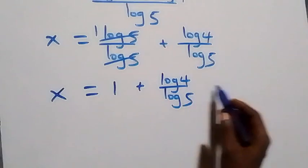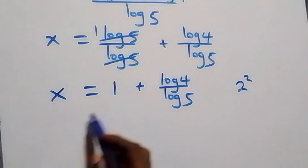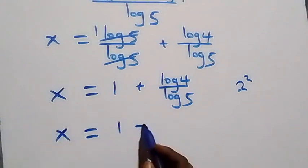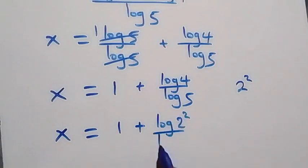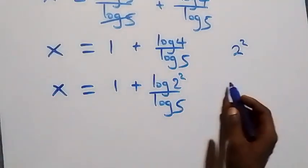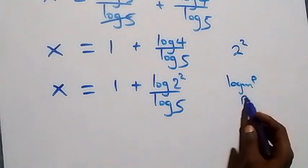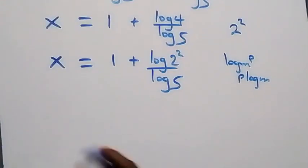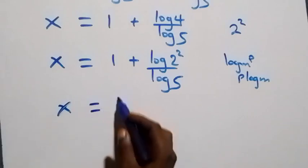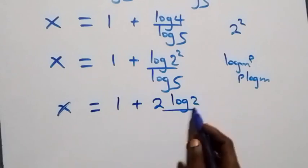From here, we express 4 as 2 squared. So x equals 1 plus log(2²) over log 5. Applying the power rule of logarithms — log of m raised to power p equals p times log m — the 2 comes down and we have x equals 1 plus 2 log 2 over log 5.